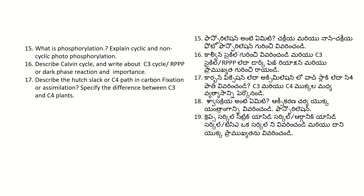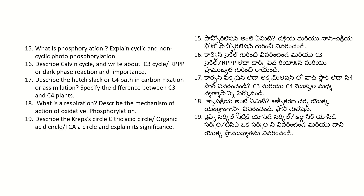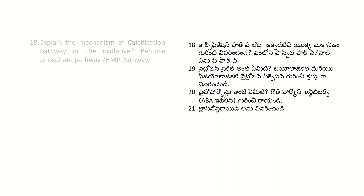Describe the Hatch-Slack or C4 path in carbon fixation or assimilation. Specify the difference between C3 and C4 plants. What is respiration? Describe the mechanism of oxidative phosphorylation. Describe the Krebs cycle, citric acid cycle, organic acid cycle, or TCA cycle and explain its significance. Explain the mechanism of the glycolysis pathway or the oxidative pentose phosphate pathway or HMP pathway.